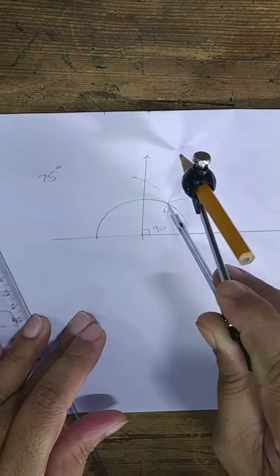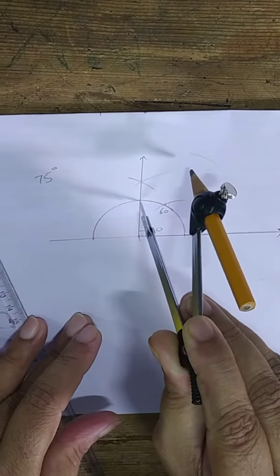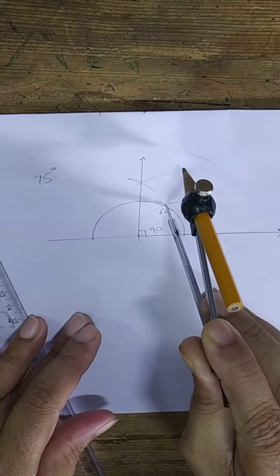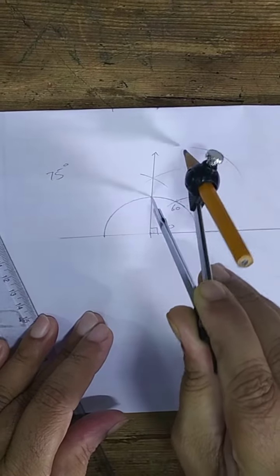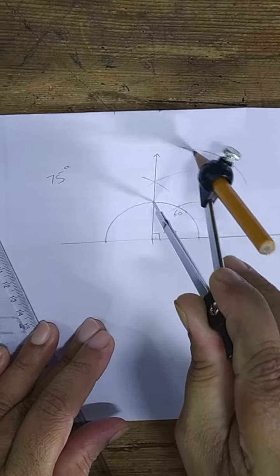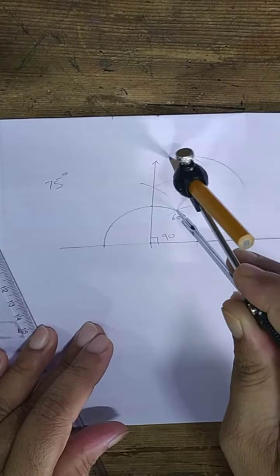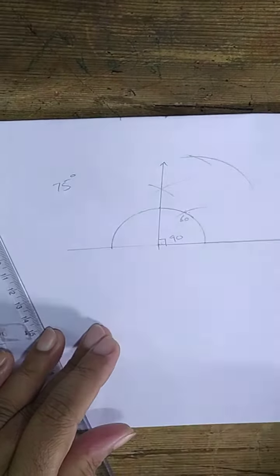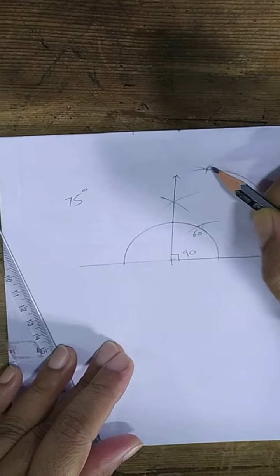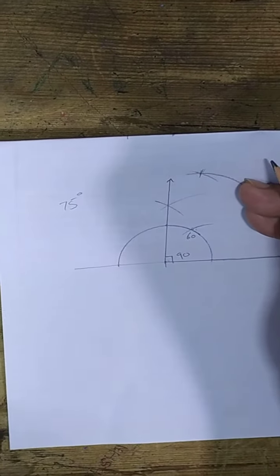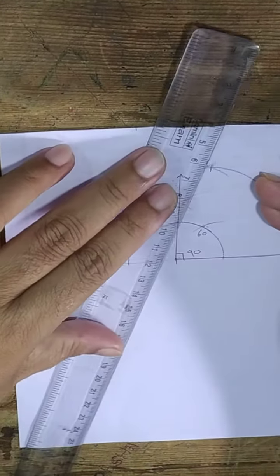Let us bisect from here. If you bisect in this way, here is your point of bisector. This is the point of intersection. And if you draw it in this way.